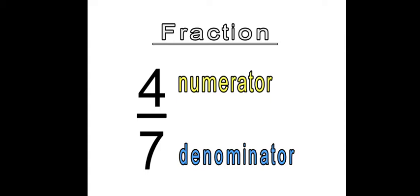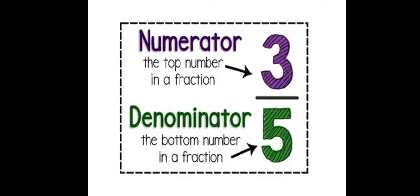See the number 4 by 7. So 4 is the numerator and 7 is the denominator. What is meant by numerator? The top number in a fraction is called numerator. So 3 is the numerator in this number.